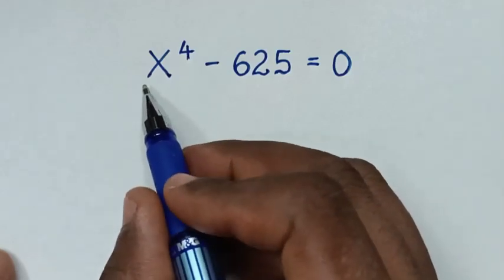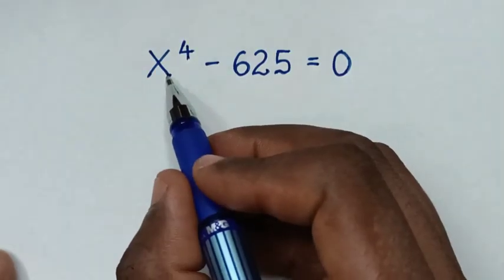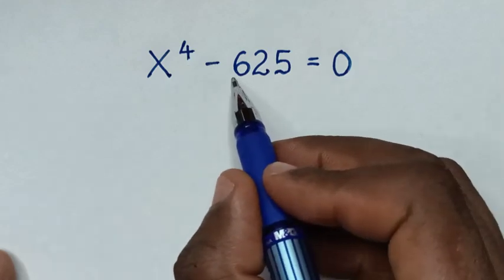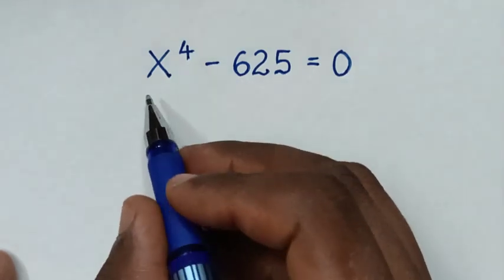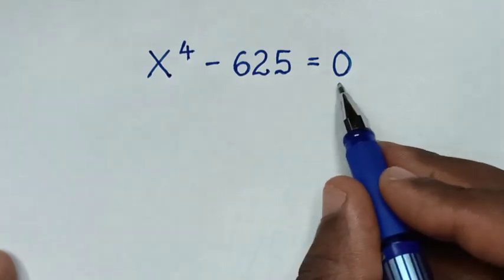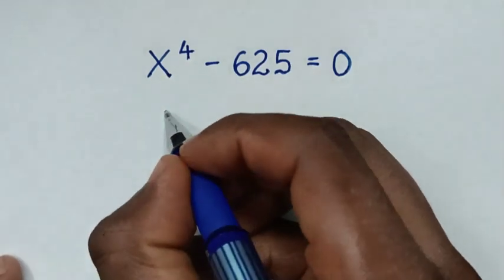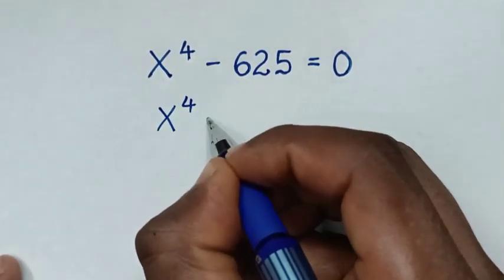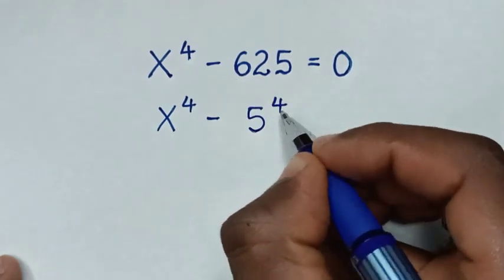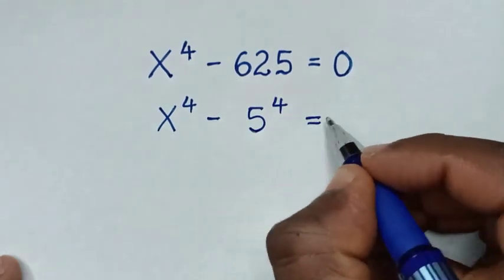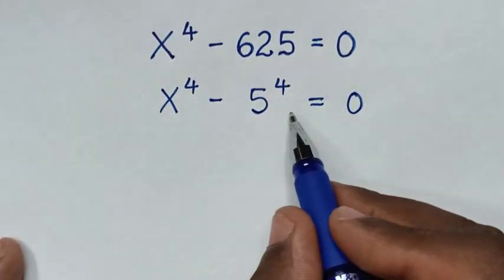Welcome. We will solve the math problem x to the power 4 minus 625 equals 0, and find the values of x. We can write this as x power 4 minus 5 power 4 equals 0.